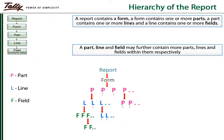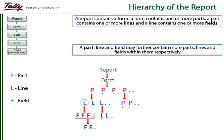A form contains a number of parts. A part contains a certain number of lines, and a line contains a number of fields. A part can further contain parts in the hierarchy; a line can further contain lines, and a field can further contain more fields within it. This gives more flexibility to the developer in designing the layout for different kinds of reports.